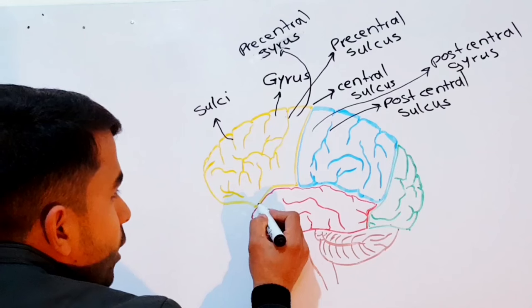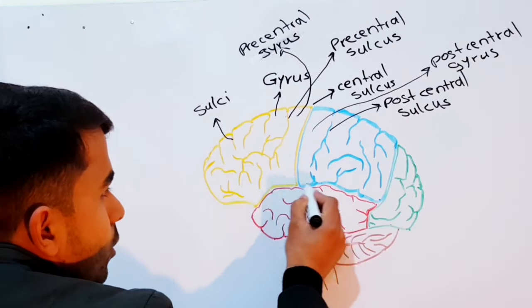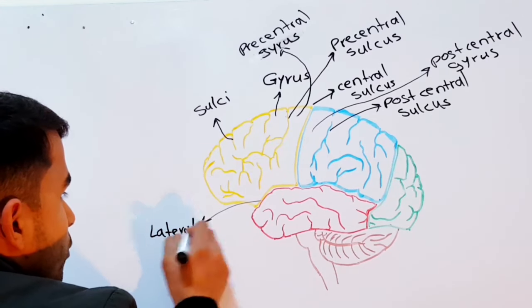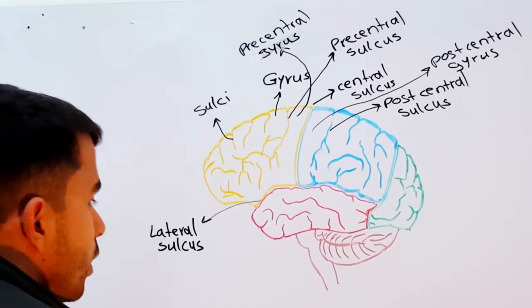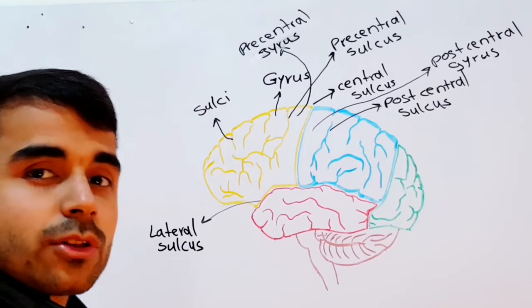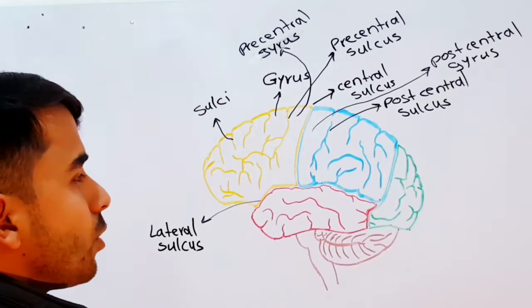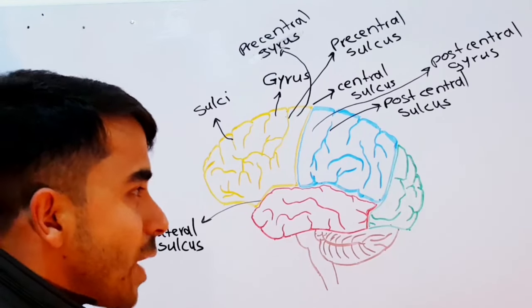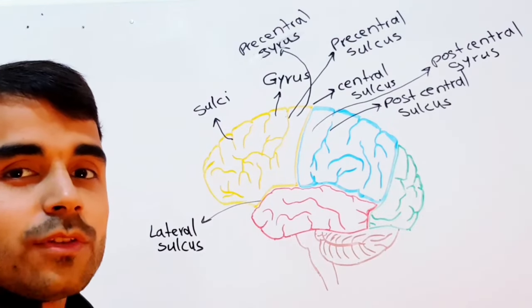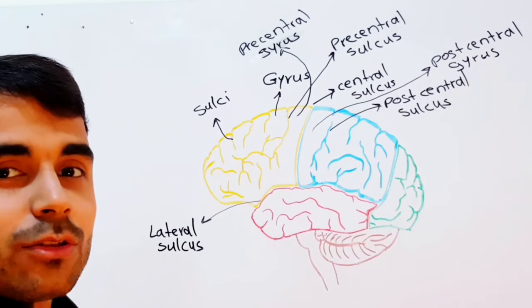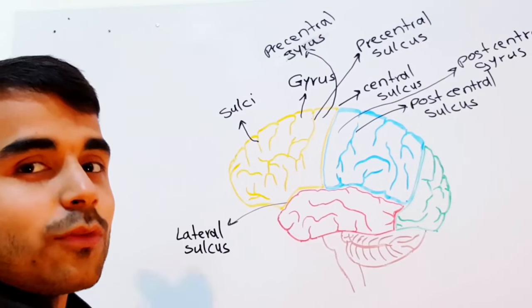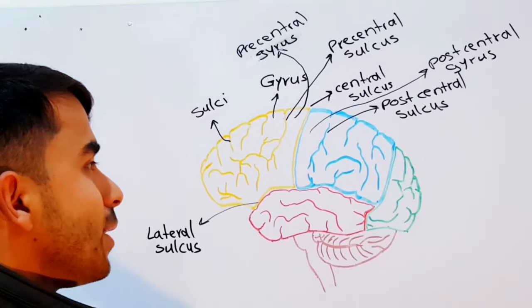There are obviously other sulci and gyri in your brain which we are not going to talk about right now, but we will cover them in separate anatomy videos and future physiology lectures. Please hit those like and subscribe buttons and stay tuned for our next videos.